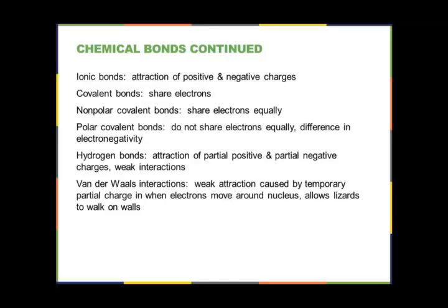Another type of weak interaction is van der Waals interactions, caused by temporary partial charges as electrons move around the nucleus. Electrons are constantly in motion, which creates these temporary partial charges. This is what allows lizards to walk on walls — they have tiny hairs on their hands and feet that create small van der Waals interactions. Large reptiles like alligators are too heavy for these interactions to hold them up.